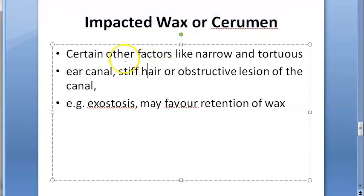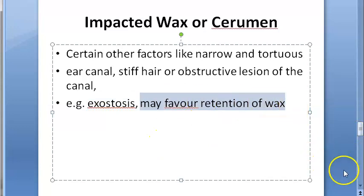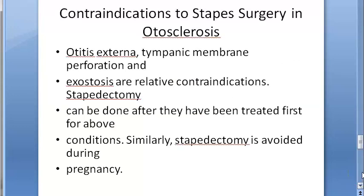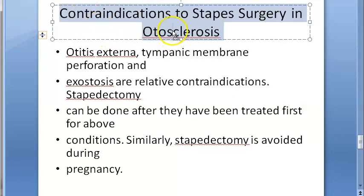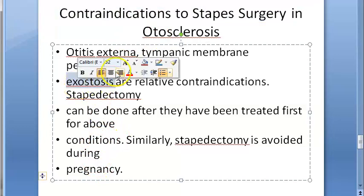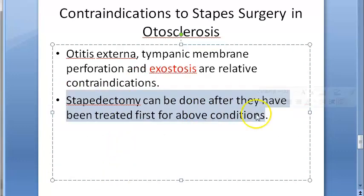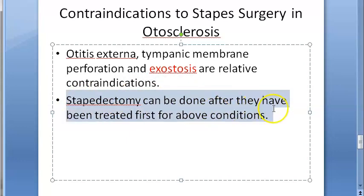Additional points: exostosis can cause impacted wax or cerumen because it favors retention of wax. Also, if a person has otosclerosis and you want to do a stapedectomy surgery, you cannot do it if that person has exostosis - it becomes a relative contraindication. Stapedectomy can only be done after the exostosis has been treated first.